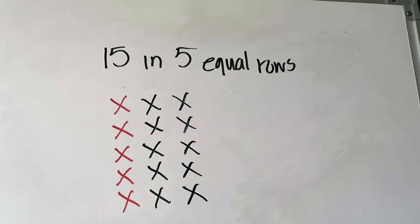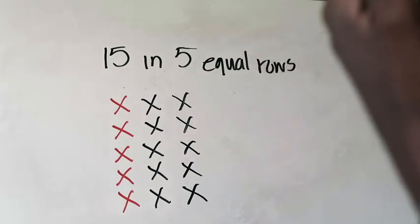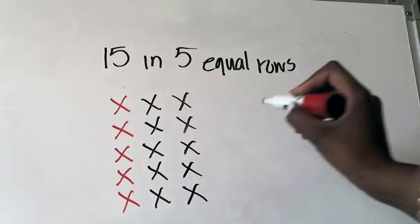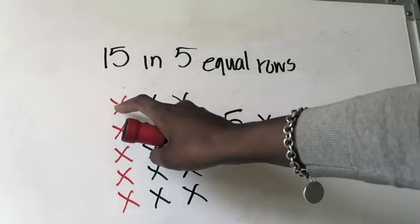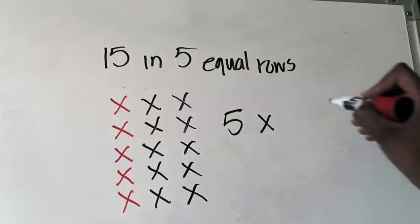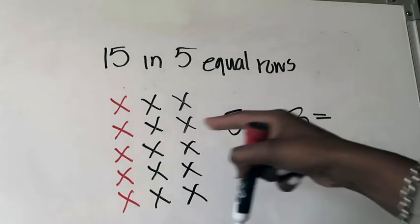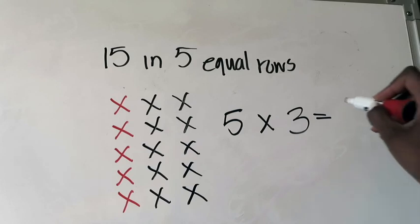So what I need to do is write a multiplication sentence for this array and come up with a product. We've learned in previous videos that the first factor tells me how many equal groups I have, and the second factor tells me how many are in each group. I have five equal groups, so my first factor is five. In each of those equal groups there are three pieces, so my second factor is three. The multiplication sentence that matches this array is five times three, and since I've already counted 15 total pieces, I know the product of five times three is 15.